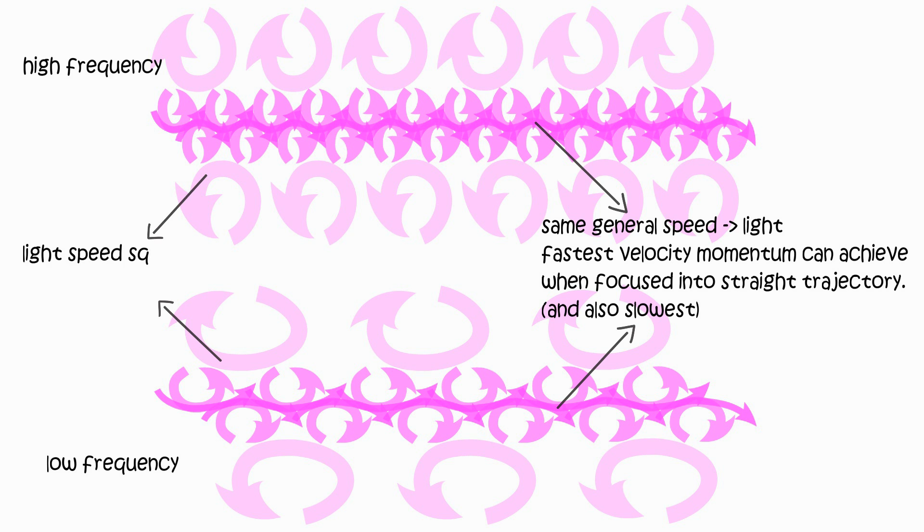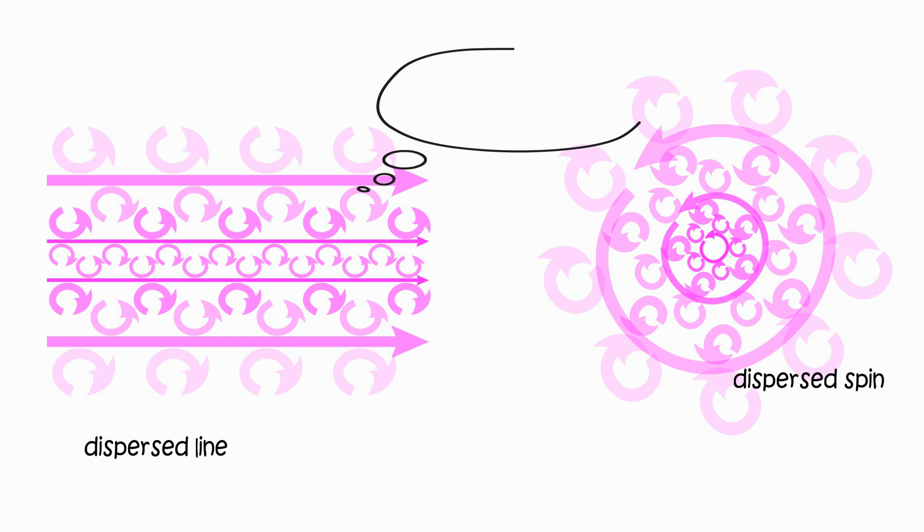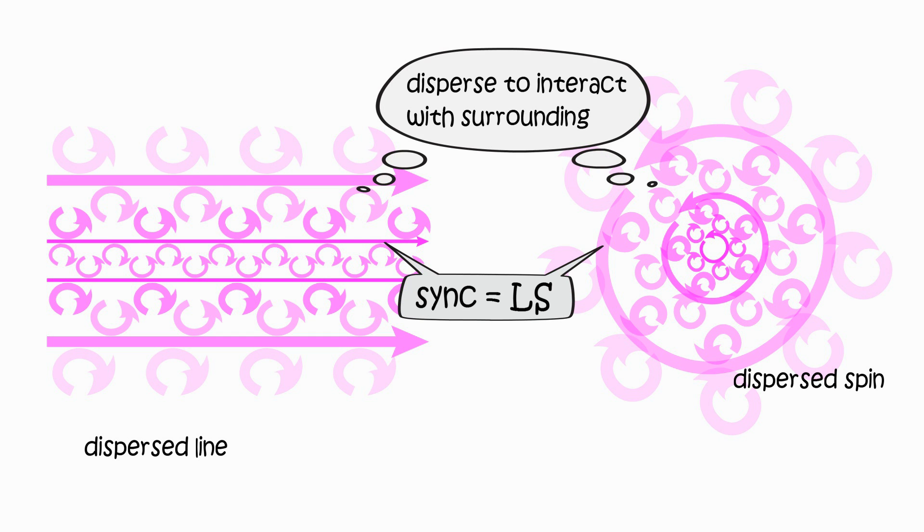Thus, the real speed of field momentum must be significantly faster than light. So instead of saying nothing can travel faster than light, one can also say nothing can travel slower than light.